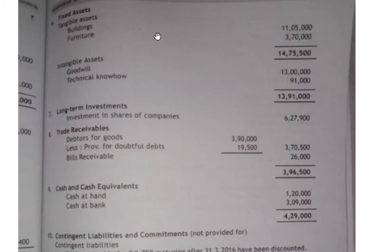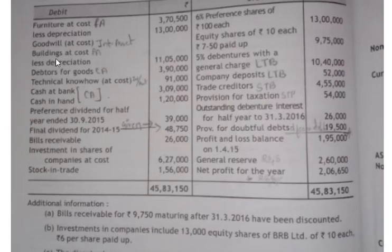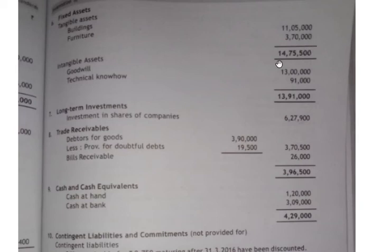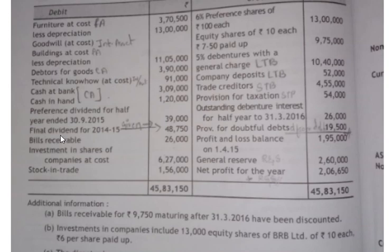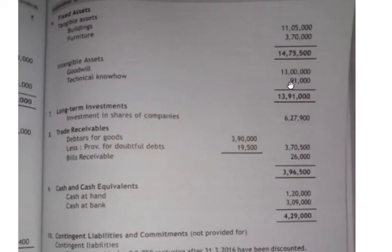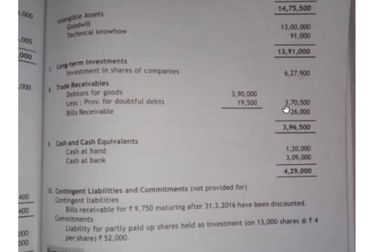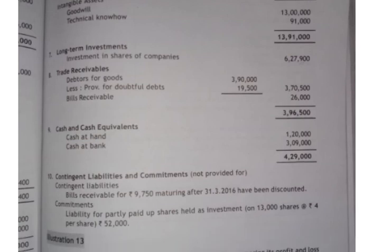Moving on to the asset side working notes, starting with fixed assets. There are two kinds: tangible assets and intangible assets. Tangible assets: buildings is eleven lakh five thousand — given after depreciation so no further deduction needed. Furniture is three lakh seventy thousand. Total tangible assets: fourteen lakh seventy-five thousand five hundred. Intangible assets: goodwill at cost is thirteen lakhs, technical know-how is ninety-one thousand. Total intangible assets: thirteen lakh ninety-one thousand.